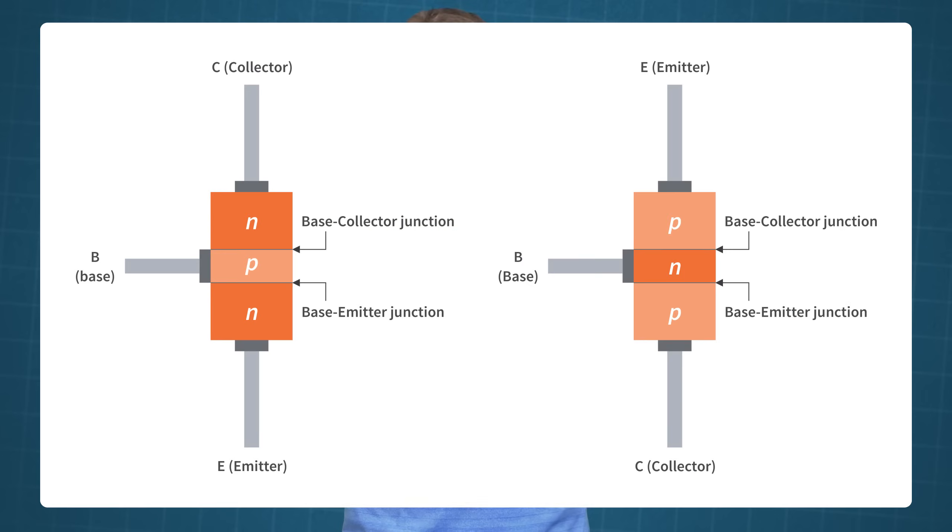These three regions that are doped differently are known as the base, collector and emitter. The base region is lightly doped and is very thin compared to the collector and emitter regions. The collector region is moderately doped while the emitter region is heavily doped.